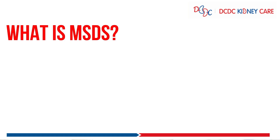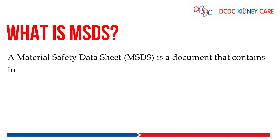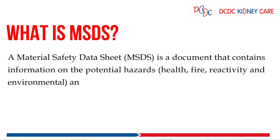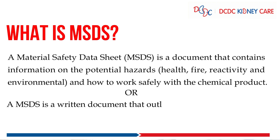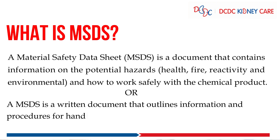What is MSDS? A material safety data sheet is a document that contains information on the potential hazards — like health, fire, reactivity, and environmental — and how to work safely with a chemical product. Or we can say a MSDS is a written document that outlines information and procedures for handling and working with chemicals.